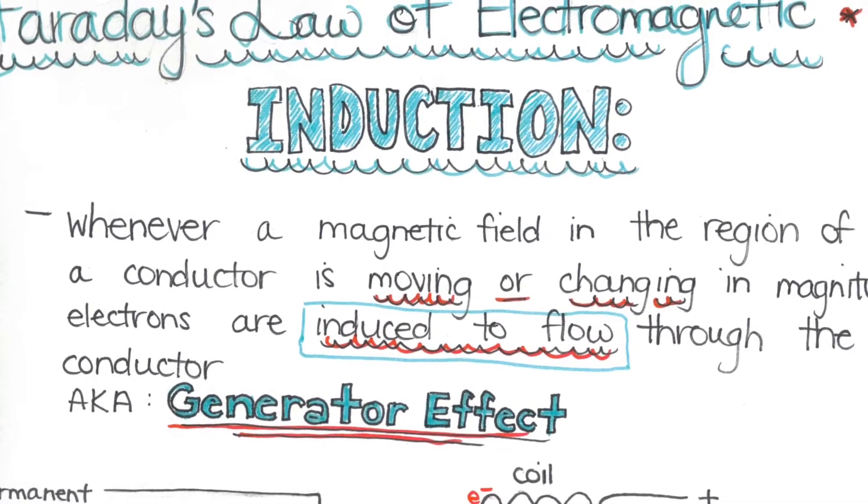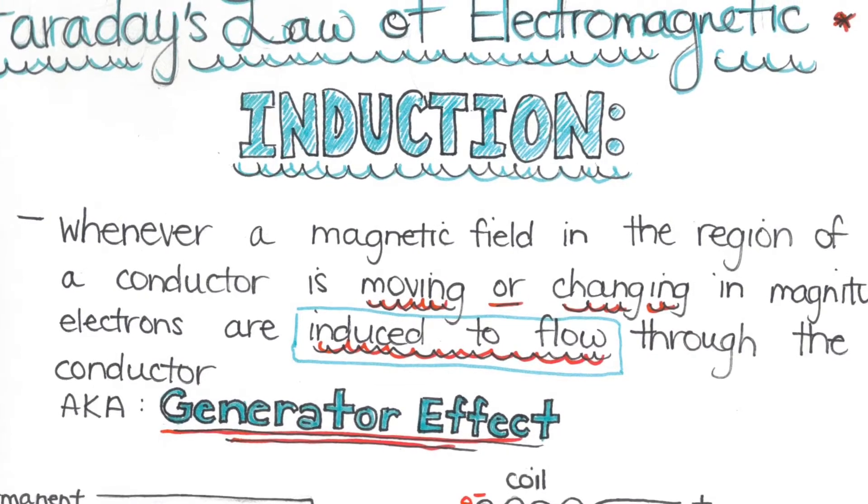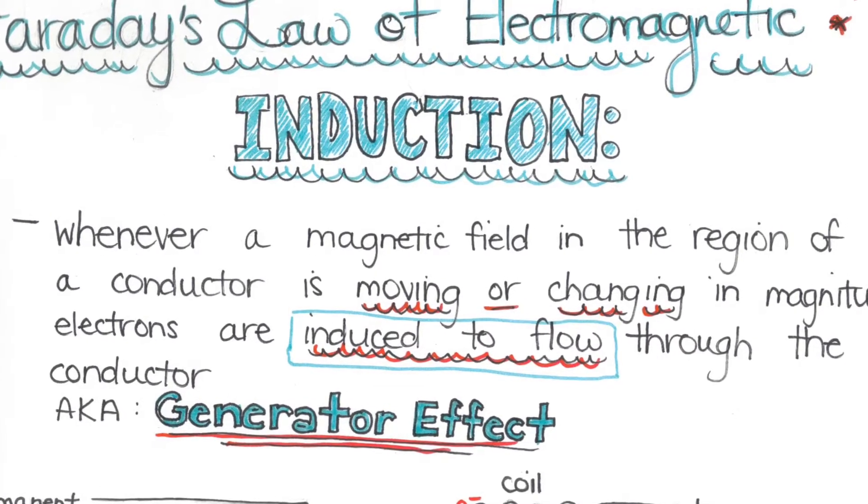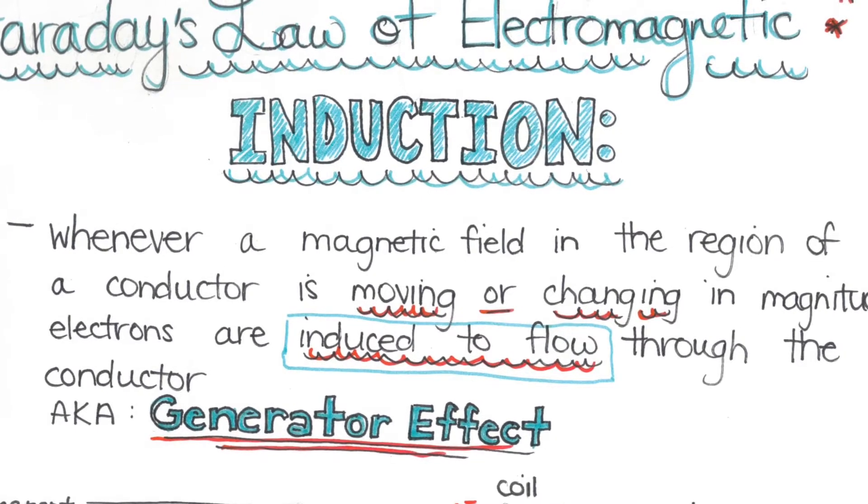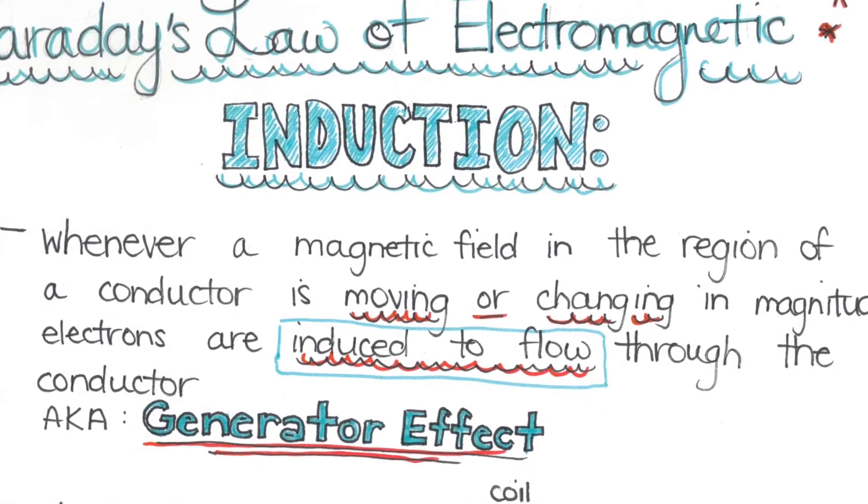Faraday's Law of Electromagnetic Induction states that whenever the magnetic field in the region of a conductor is moving or changing in magnitude, electrons are induced to flow through the conductor.